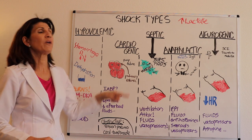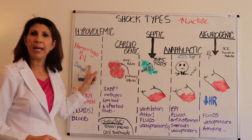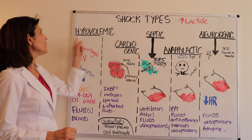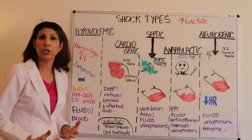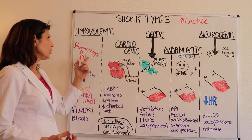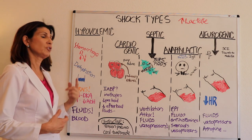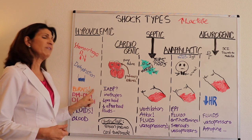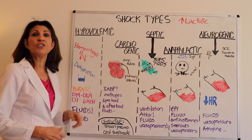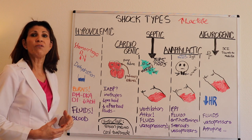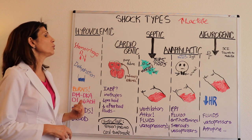Now for an overview of the various types of shock. Hypovolemic shock — the name tells you what's wrong — the patient has a diminished blood volume, whether from hemorrhage, dehydration, or burn shock, a specific type of hypovolemic shock. Treatment involves replacing the volume, whether with packed red blood cells or isotonic crystalloids.